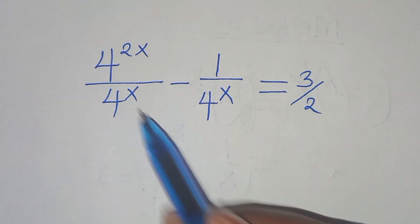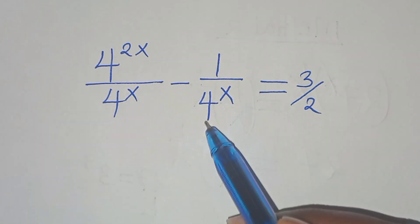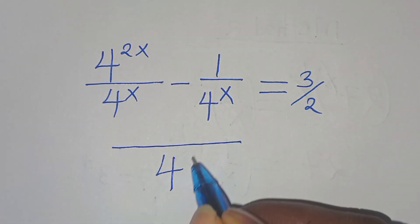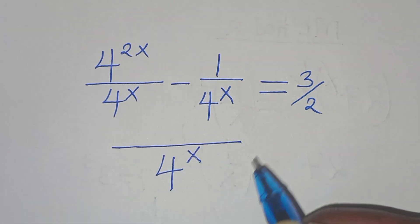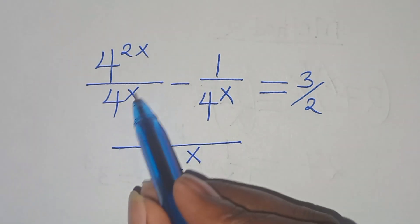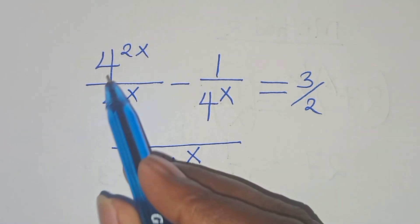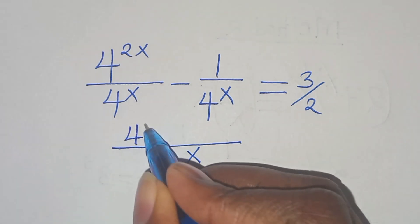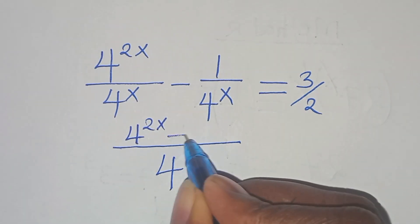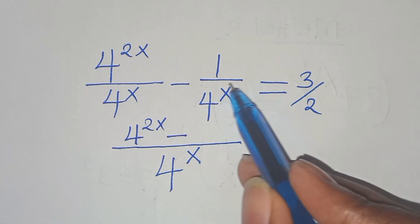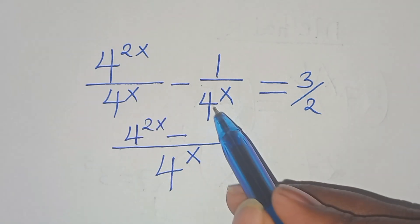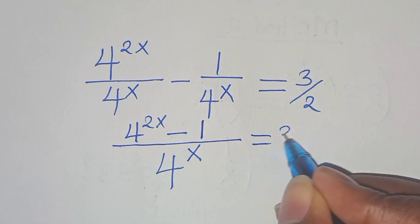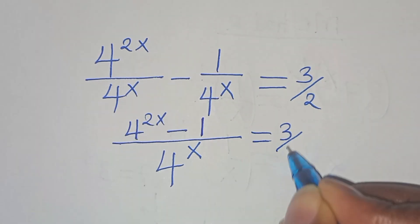Now, 4 to the power of x is common here, so the LCM is 4 to the power of x. 4 to the power of 2x divided by 4 to the power of x is 1 times 4 to the power of 2x, so in the numerator we have 4 to the power of 2x. Subtract: 4 to the power of x divided by 4 to the power of x is 1 times 1, which is 1. This equals 3 over 2.